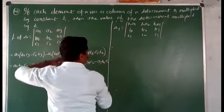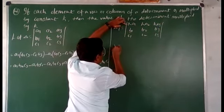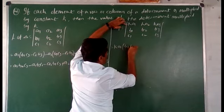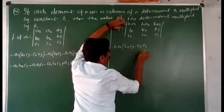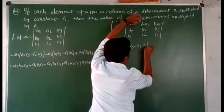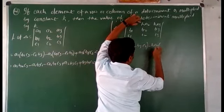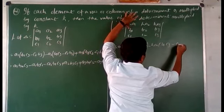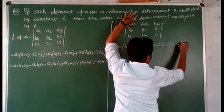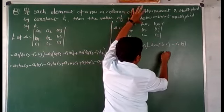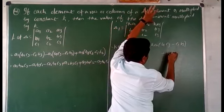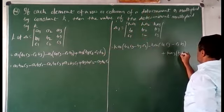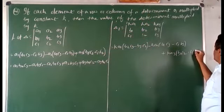Again, expanding delta1: that equals k·a1 times (b2·c3 − b3·c2) minus k·a2 times (b1·c3 − c1·b3) plus k·a3 times (b1·c2 − c1·b2).